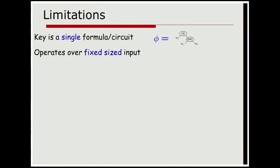Here, we're actually going to be working on what we call the public index model, which just means that we're only trying to hide the message. We're not going to hide this assignment of variables itself. So kind of just think of these as being out in the clear. What I want to do for this talk is to actually focus in on one particular limitation for this type of functional encryption. In particular, here the key is going to be a single, not a family, a single formula or circuit. And by definition, essentially, this means that it will only operate over a fixed-size input.